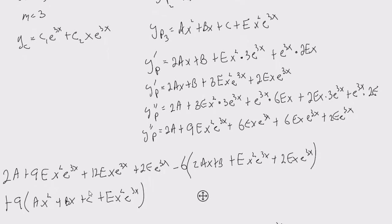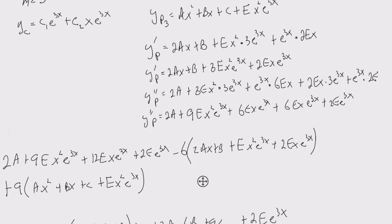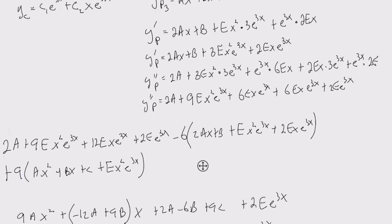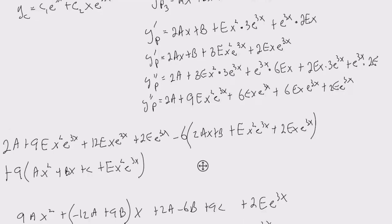So y double prime minus six y prime plus nine y. And then I worked really hard to combine like terms. So I'll kind of show you all the different terms that I got partnered up.